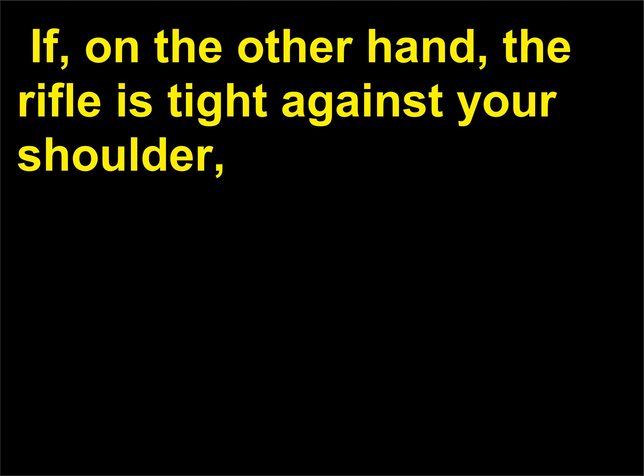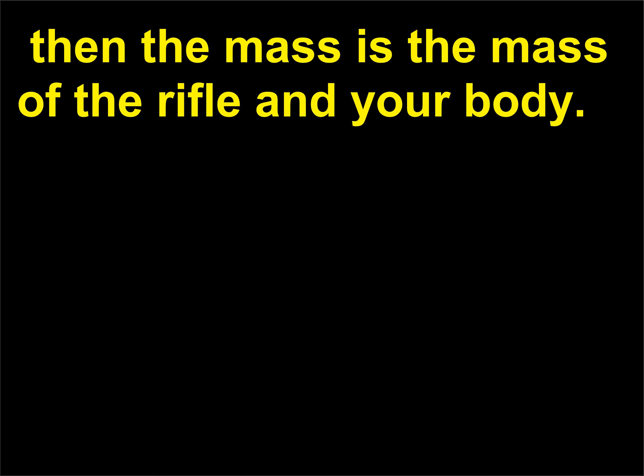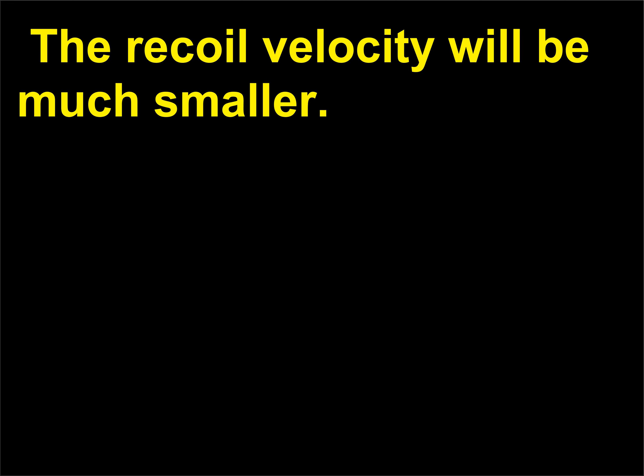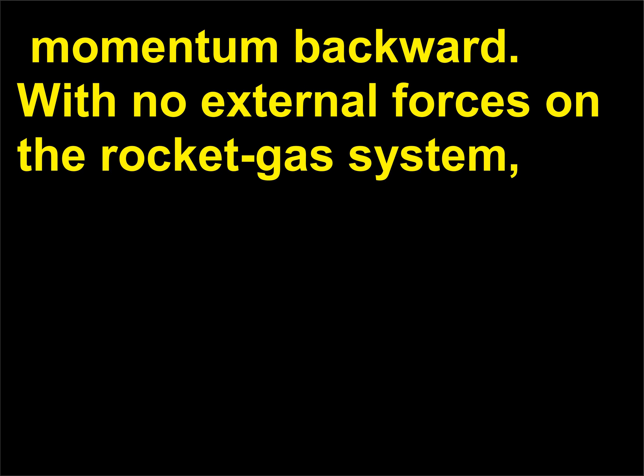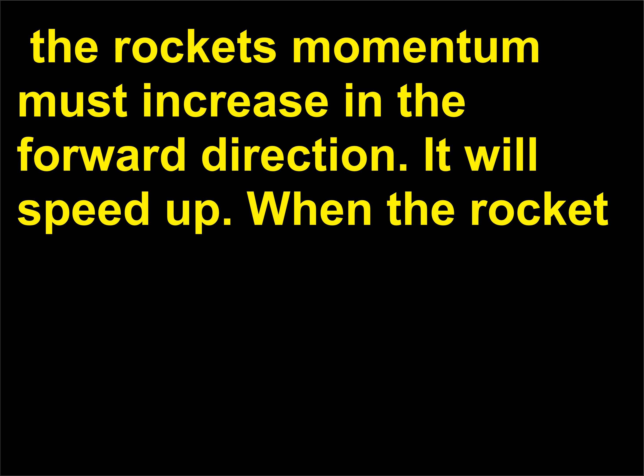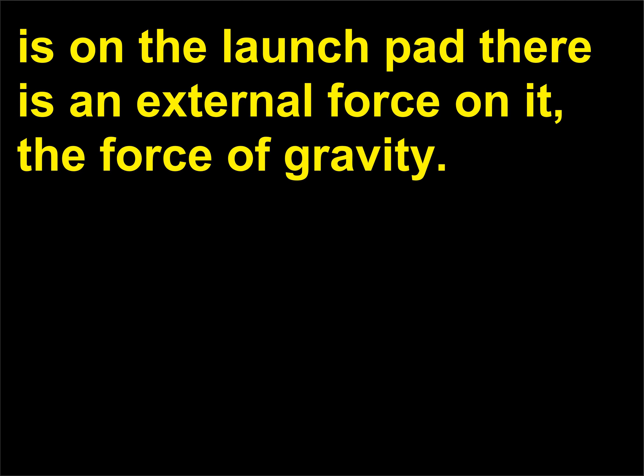If the rifle is tight against your shoulder, then the mass is the mass of the rifle and your body combined, so the recoil velocity will be much smaller. With no external forces on the rocket-gas system, the rocket's momentum must increase in the forward direction — it will speed up. When the rocket is on the launch pad, there is an external force on it: the force of gravity.